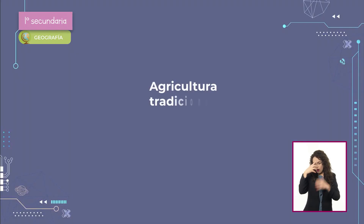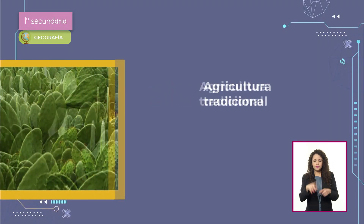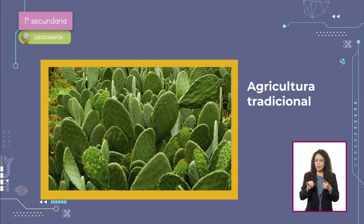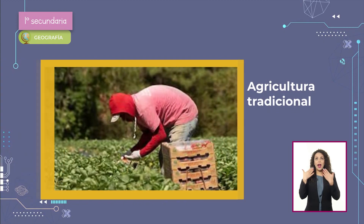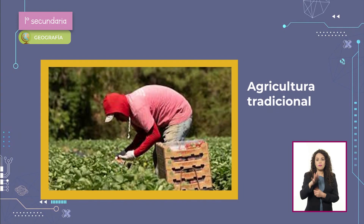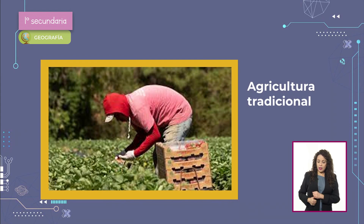En el supermercado he observado productos etiquetados como hidropónicos, lo que significa que son cultivados en agua. Compartan esta información con sus familias y entre todas y todos contribuyamos al cuidado del medio ambiente, consumiendo estos productos y sin desperdiciar alimentos, solo utilizando lo necesario. Por otro lado, la actividad agrícola se clasifica según sus métodos de producción. El primero es el tradicional, en donde se cultivan productos locales aprovechando el clima, el suelo y el relieve, por ejemplo, en la Alcaldía Milpa Alta de la Ciudad de México.